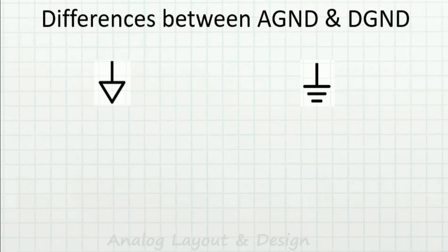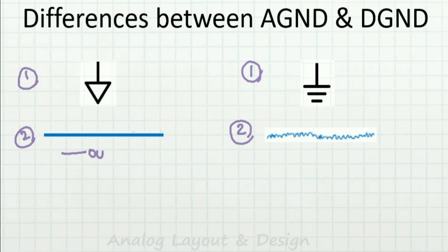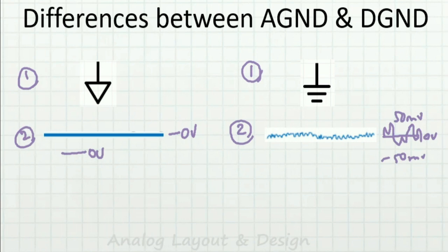Let us understand the differences between analog ground and digital ground. The first difference is the symbol — AGND has one symbol and DGND has another. The second difference is that analog ground will always be at zero volts — flat. But digital ground will not be at zero volts; it will be noisy, oscillating perhaps plus or minus 50 millivolts or even plus or minus 100 millivolts.